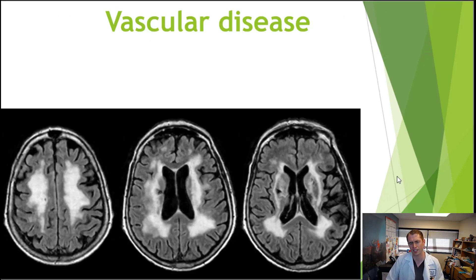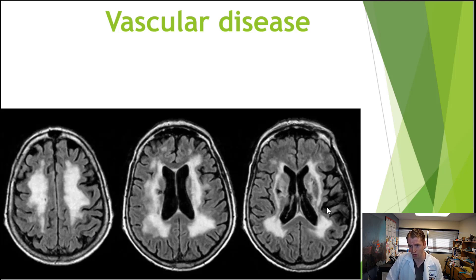Here is another example of an MRI of someone with advanced vascular disease. This particular individual had rapidly progressive cognitive impairment due to uncontrolled hypertension, known as Binswanger's disease. You can see extensive subcortical white matter disease, periventricular capping, involvement of the external capsule on both sides, and some areas of FLAIR suppression, more consistent with infarct than demyelinating disease.